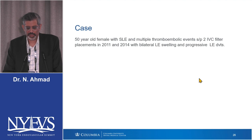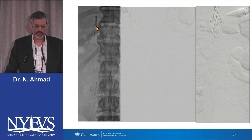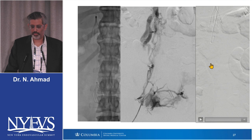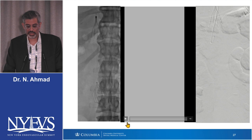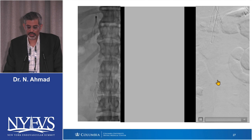Case: 50-year-old female with lupus and multiple thromboembolic events, had two filters placed in 2011 and 2014 — bilateral lower extremity swelling and progressive DVTs. She had a Gunther Tulip on top and a Trapeze at the bottom. Below the Trapeze there was complete occlusion of the IVC.